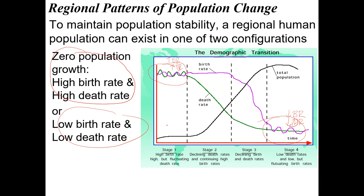This graph shows the difference between pre-industrialized societies — mainly developing countries. What happens is that at some point the society gets developed enough to decrease the death rate, but birth rates are still high.